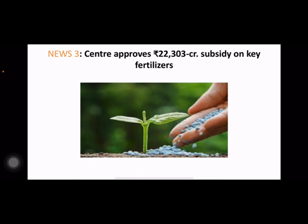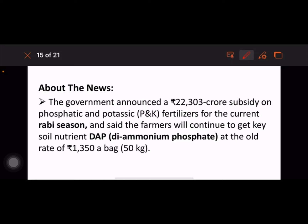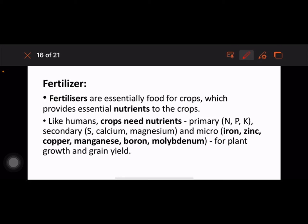The Centre approved a ₹22,303 crore subsidy on key fertilizers. This comes under GS3 economy. The government announced this subsidy on phosphatic and potassium fertilizers for the current Rabi season and said farmers will continue to get DAP — di-ammonium phosphate. Fertilizers are essentially food for crops, providing essential nutrients. The primary nutrients are NPK, and secondary and micronutrients include copper, manganese, boron, and molybdenum for plant growth and grain yield.